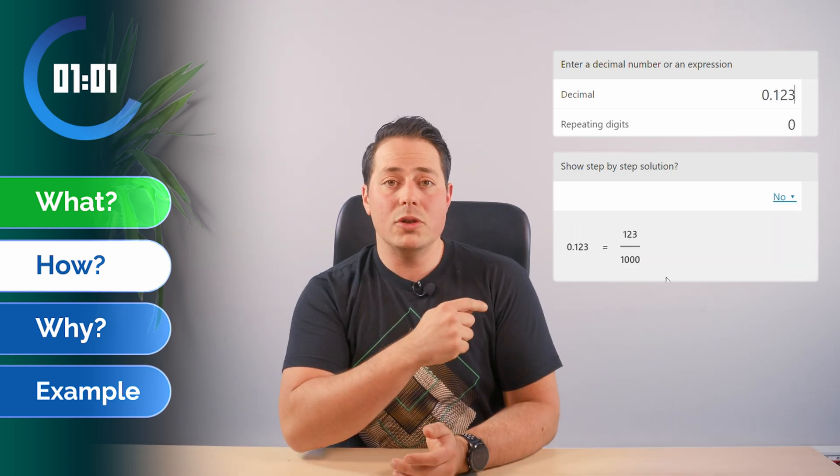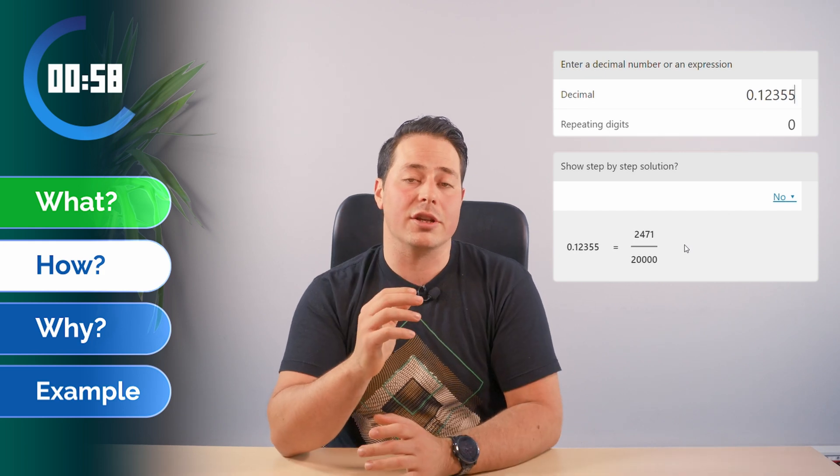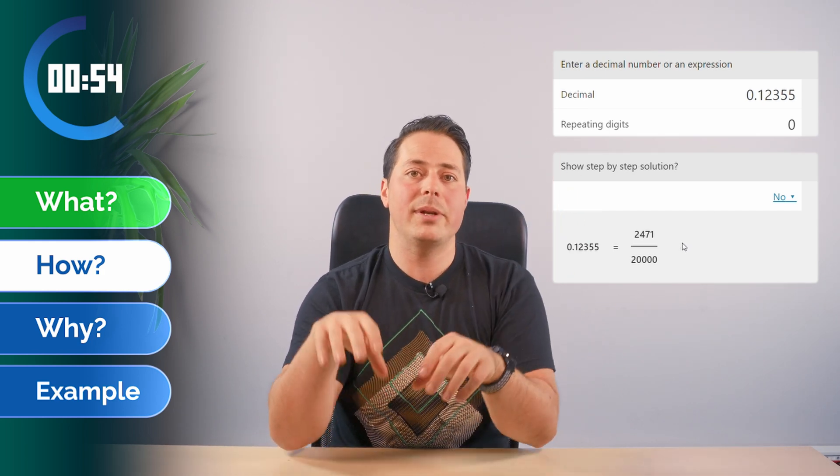To use our calculator is as simple as placing our decimal version of the number into it, and we automatically get the fraction that represents the same value. The decimal number we input and the fraction we get as a result have the same value.